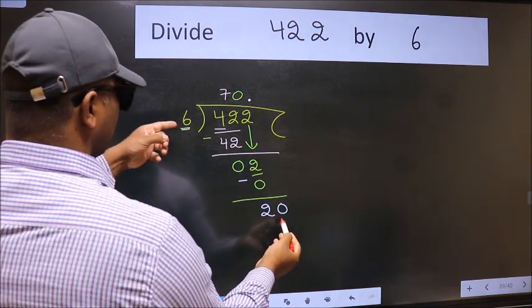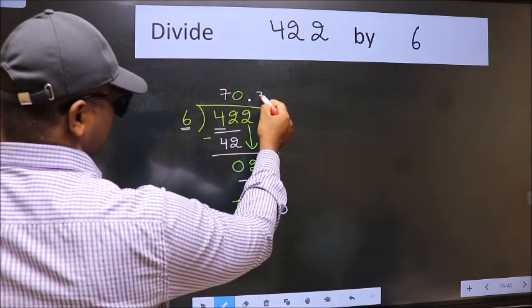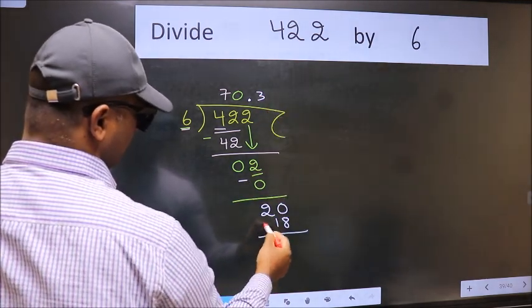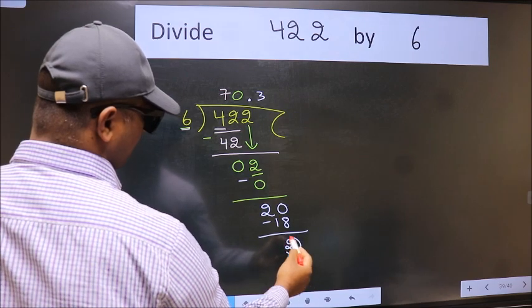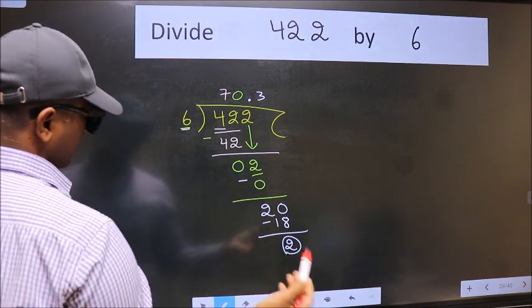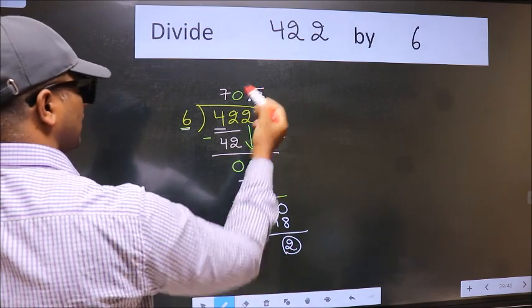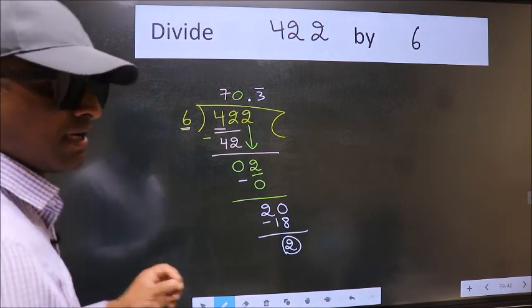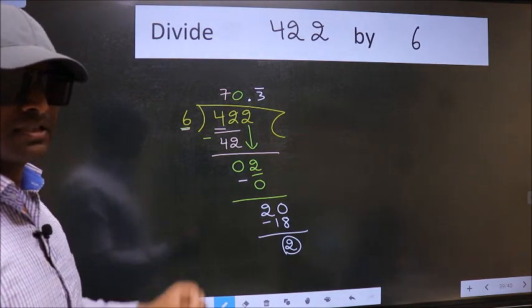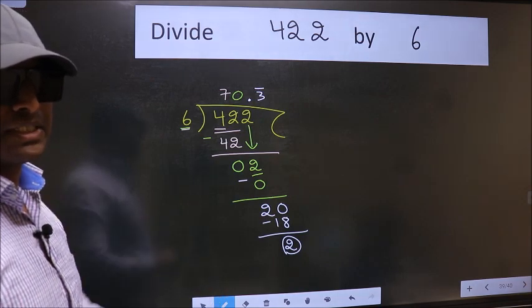A number close to 20 in the 6 table is 6 times 3 is 18. Now we subtract. We got 2 again. That means we get bar on this number. Did you understand where the mistake happens? You should not do that mistake.